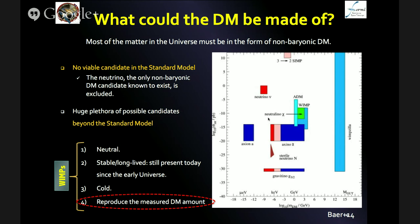I highlight this fourth point — reproducing the measured dark matter abundance — because, as you will see later, Andrea will be reporting about our limits, and we are starting to touch the relevant part of the parameter space where we are actually testing this fourth point for the first time.